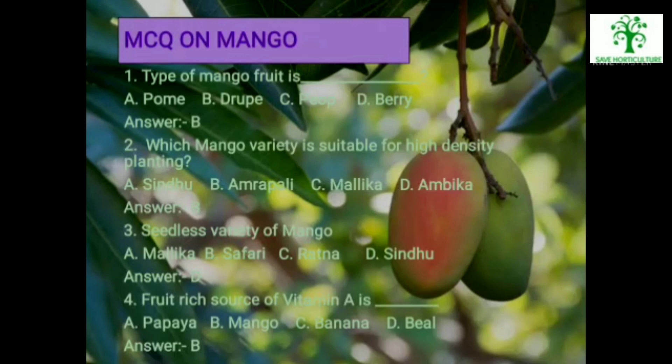Third: Seedless variety of mango — options are Malika, Safari, Ratna, Sindhu. The answer is Sindhu. Fourth: Fruit rich source of Vitamin A is — options are Papaya, Mango, Banana, Bael. The answer is Mango.